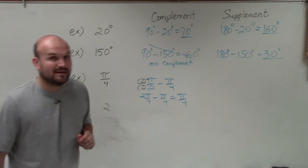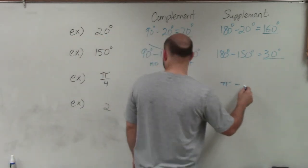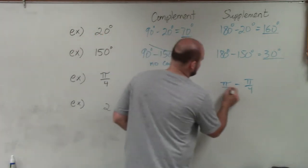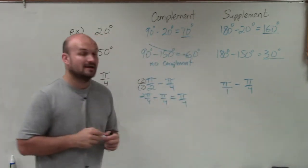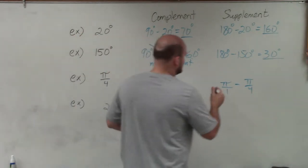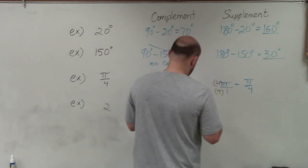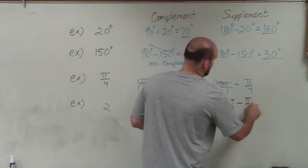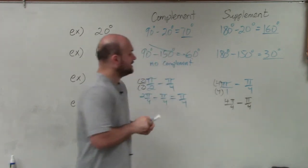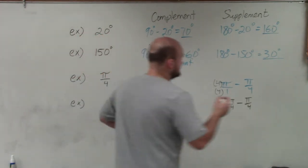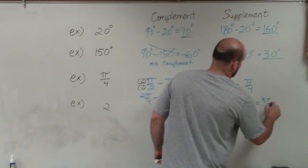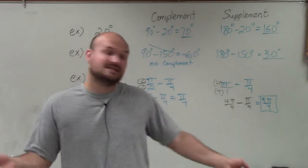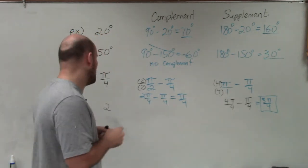For the next one, the supplement is going to be π minus π/4. So to subtract them, I'm going to rewrite this as a whole number, so it's π/1. Then I'll multiply to get the same denominator, so I'll multiply by 4/4. Therefore now I have 4π/4 minus π/4. When I do 4π/4 minus π/4, I now obtain 3π/4. So therefore you can see that now I have 3π/4 that is going to be its supplement.